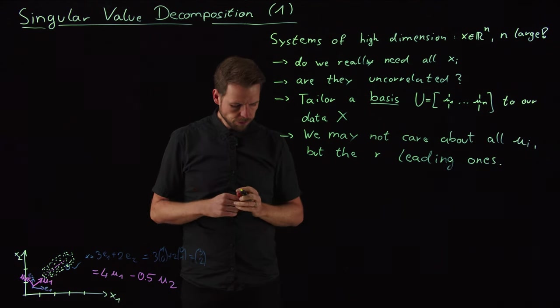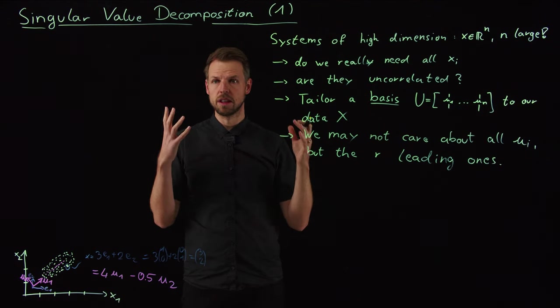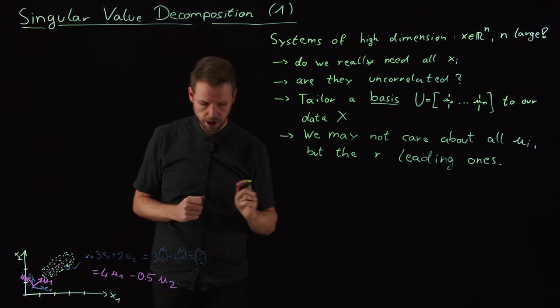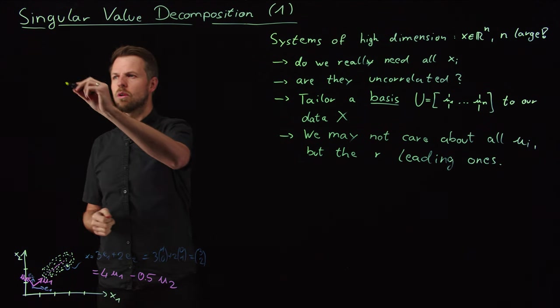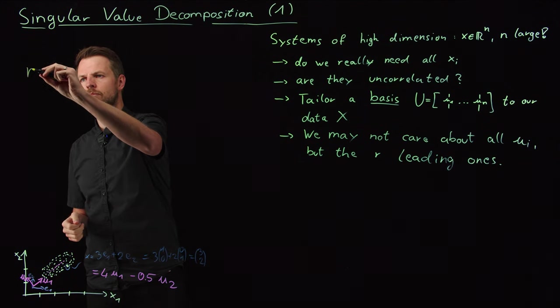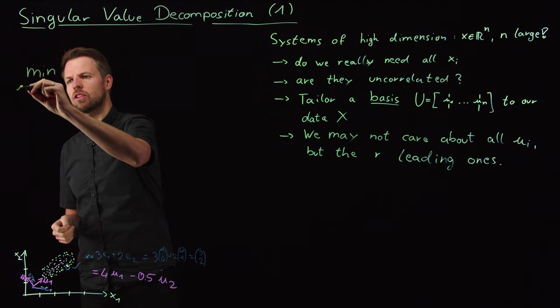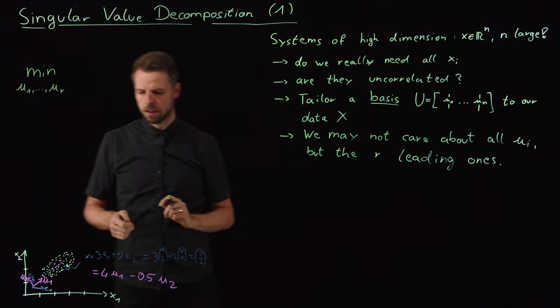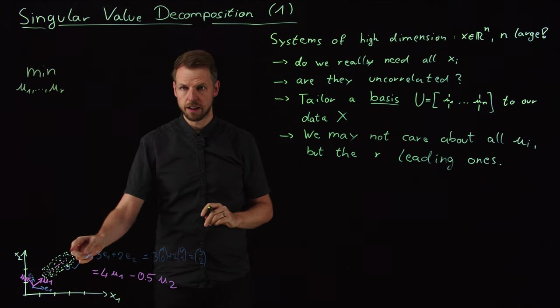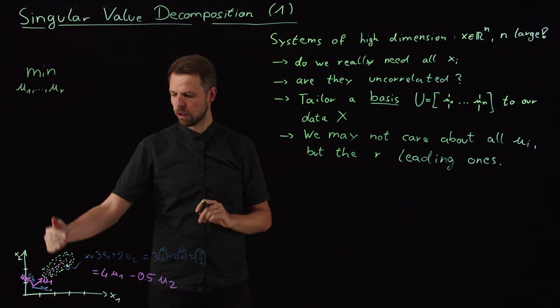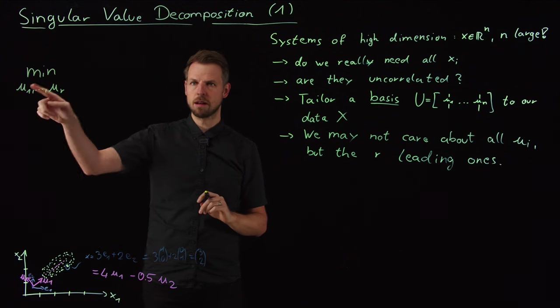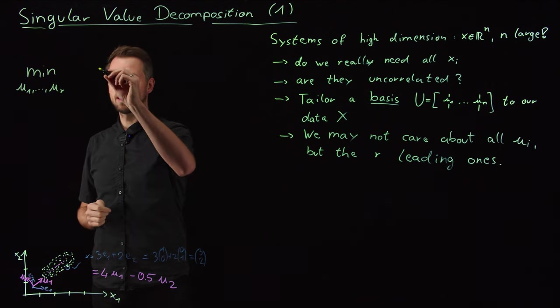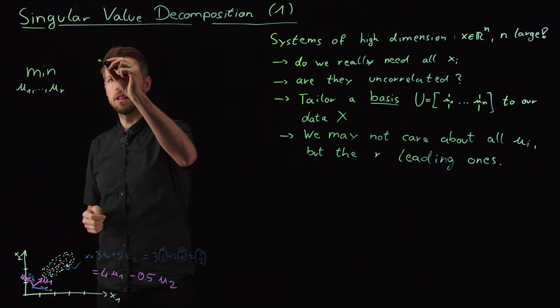And so this seems to be a challenging problem. How can we do this? And whenever we have no idea really how to do this, we can formalize it as an optimization problem. So what I'm going to say now is I want to minimize over a bunch of vectors, u1 to ur, the error between my entire data point and the data point restricted to this r-dimensional subspace that is spanned by these leading r eigenvectors.